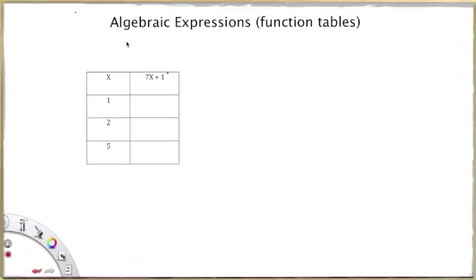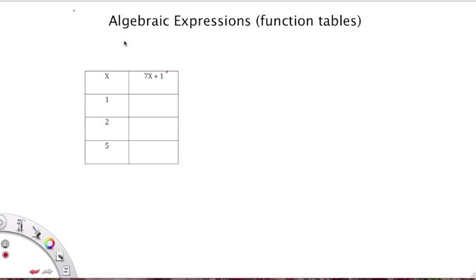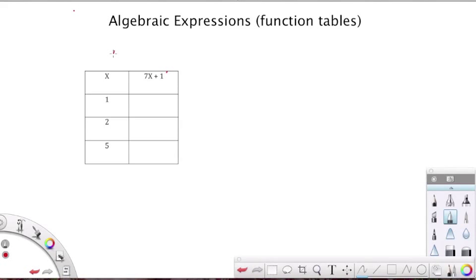Boys and girls, here we have a table. As we can see in this table, it has two columns. The first column, right here, has our variables. The variable that we have chosen, pardon my penmanship, is X. We see here that X has multiple values. At one point, it equals one. At another point, it equals two. At another point, it equals five.